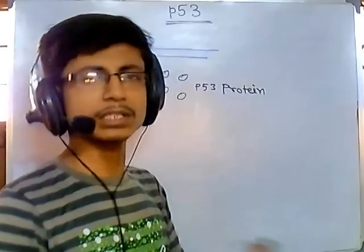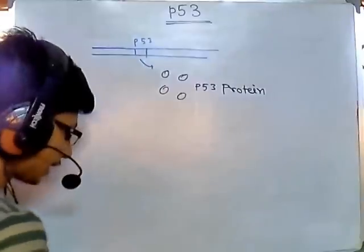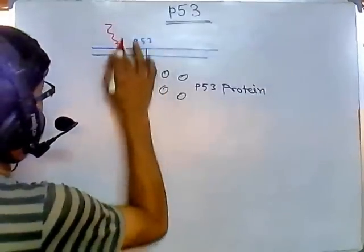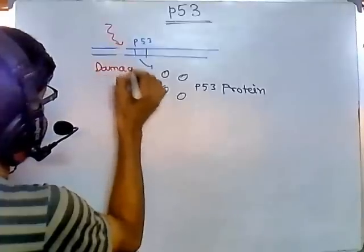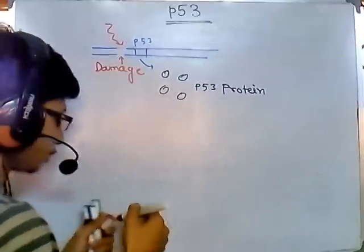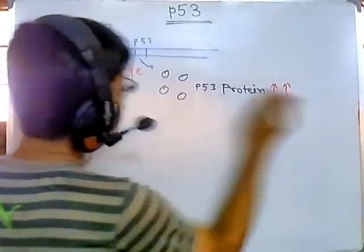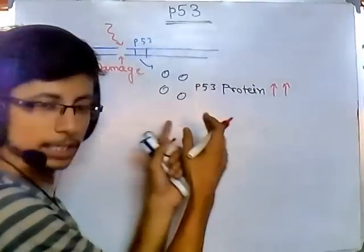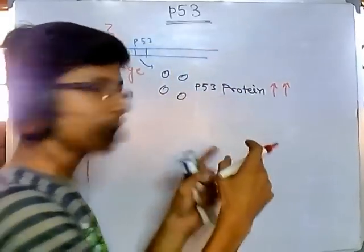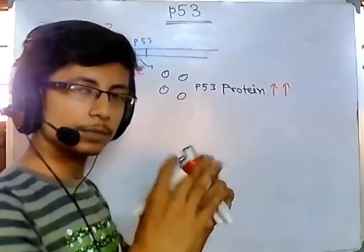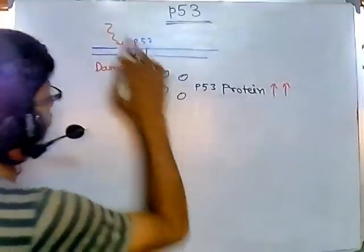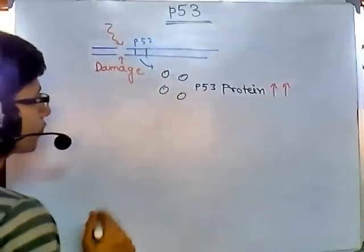Now, once your DNA encounters any kind of damage, the production of p53 goes up. There is a type of signal inside the cell: when there is any damage in the chromosome, gene, or DNA, the p53 level rises, the p53 protein becomes stabilized, and the amount goes up. This happens whenever any kind of DNA damage occurs.